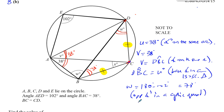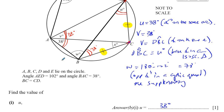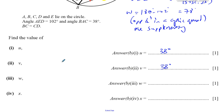So W is equal to 180 minus 102 degrees, which is 78 degrees. You can say the reason is opposite angles in a cyclic quadrilateral are supplementary, meaning they add up to 180 degrees. So W must be 78 degrees.